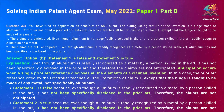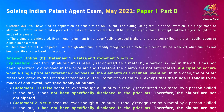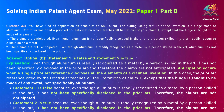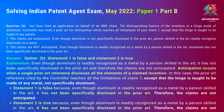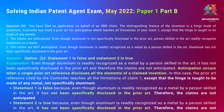Explanation: Even though aluminum is readily recognized as a metal by a person skilled in the art, it has not been specifically disclosed in the prior art, and therefore the claims are not anticipated. Anticipation occurs when a single prior art reference discloses all the elements of a claimed invention. In this case, the prior art reference cited by the controller teaches all the limitations of claim 1, except that the hinge is taught to be made of any metal, not specifically aluminum. Therefore, the claims are not anticipated.